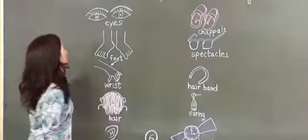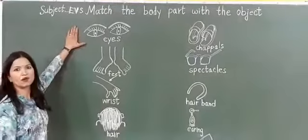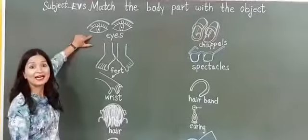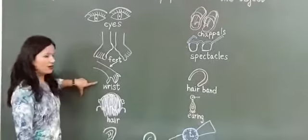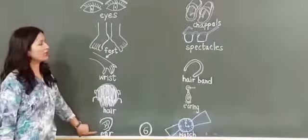Now teacher is going to start the exercise. First, I am going to tell the name of the body parts. What is this? Eyes. And what is this? Feet. This is wrist, hair, ear.